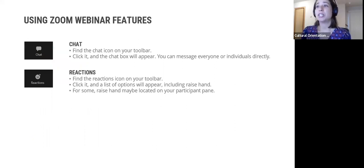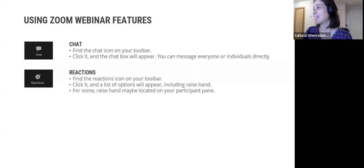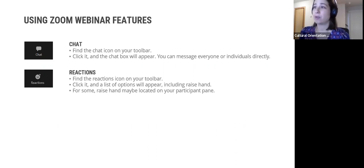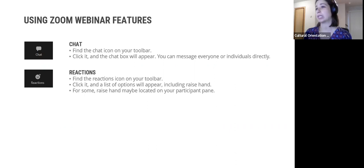Today Ella will be monitoring your questions in the chat, typing in additional information, web links, and answering some of you directly. We'll be using two Zoom webinar features: chat and reactions. To use the chat feature, find the icon on the screen, click it, and the chat box will appear. Make sure you are choosing to message everyone. We have also activated the Q&A feature, so please enter your questions into the Q&A section so they won't get lost in the chat.